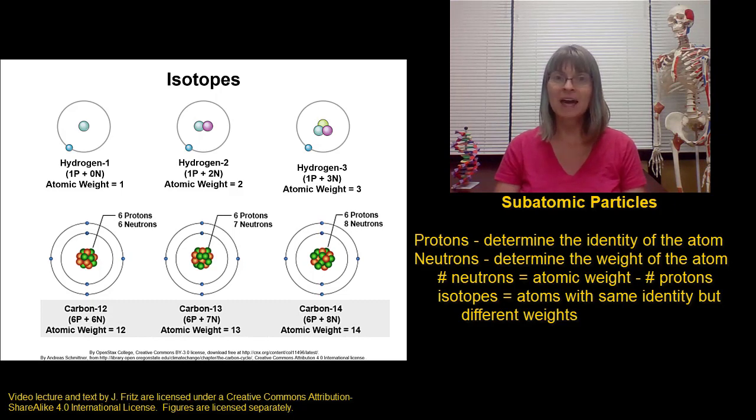These unstable atoms want to become more stable, and to do that, they release energy. And that energy that's released by unstable isotopes is what we call radiation. So things like polonium or uranium or certain isotopes of carbon even release energy in order to become more stable. They release radiation.